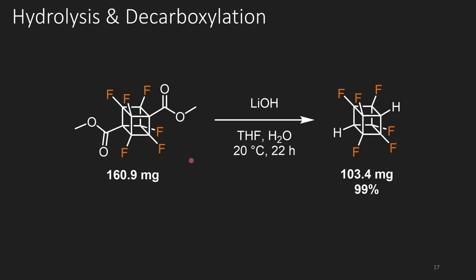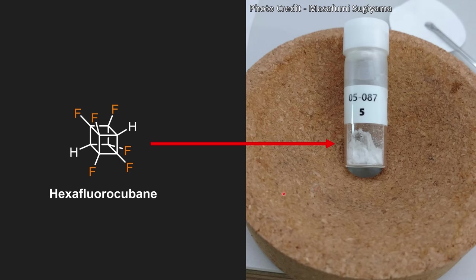The next step was to hydrolyze the diester to the corresponding dicarboxylic acid. It's well known that perfluorocarboxylic acids readily undergo decarboxylation — this is a rule of thumb, as seen with compounds like Gen X which are readily decarboxylated. This decarboxylation afforded hexafluorocubane in 99% yield, giving them 103.4 milligrams to push forward. We also have a picture of hexafluorocubane. Thanks to Masafumi for sending these pictures — they look absolutely beautiful. And if you think these pictures are good, just wait till you see perfluorocubane.